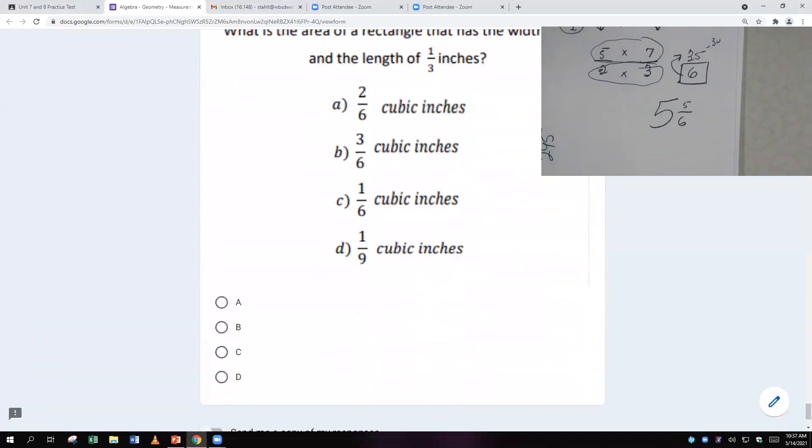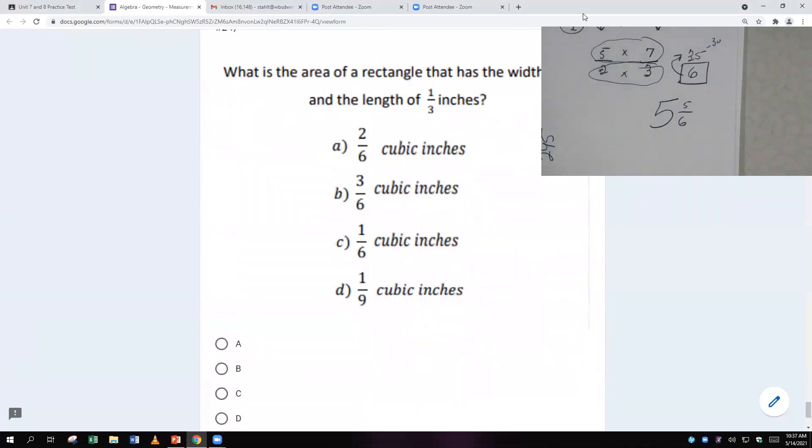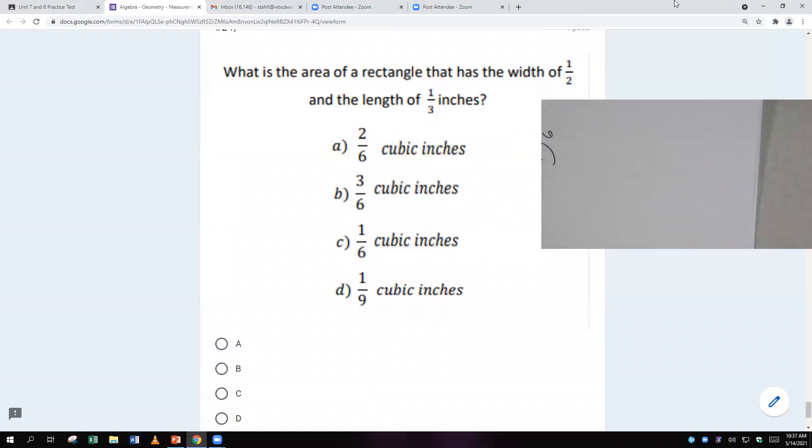And then our final question, ladies and gentlemen, we did it. Our final question is, what is the area of a rectangle that has a width of a half and a length of a third? Remember, length times width equals area. So it's half times a third. And the way we multiply fractions, just multiply across.